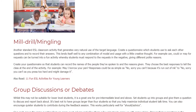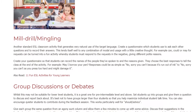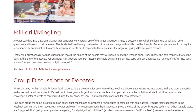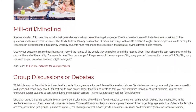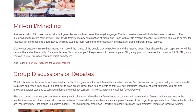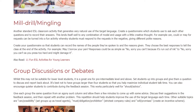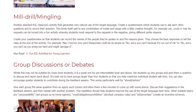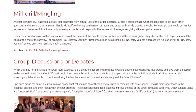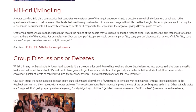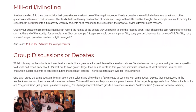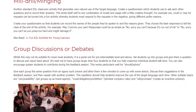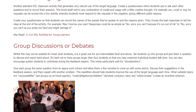Group discussions or debates. Whilst this may not be suitable for lower level students, it is a great one for pre-intermediate level and above. Set students up into groups and give them a question to discuss and report back about. It's best not to have groups larger than four students so that you help maximize individual student talk time. You can also encourage quieter students to contribute during the feedback session. This works particularly well for should/advice. Give each group the same question from an Agony Aunt column and allow them a few minutes to come up with some advice. Discuss their suggestions in the feedback session, and then repeat with another problem.